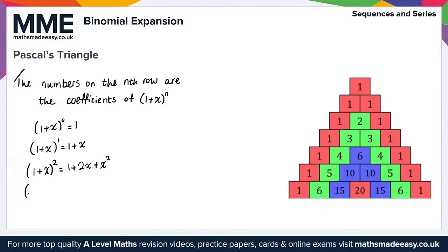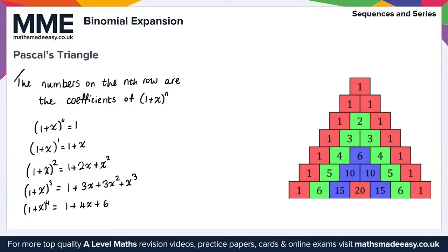This pattern keeps going. For example, (1+x) all cubed equals 1 plus 3x plus 3x squared plus x cubed. And if we do (1+x) to the 4, that equals 1 plus 4x plus 6x squared plus 4x cubed plus x to the 4. That carries on and so on, and that gives us everything we need for Pascal's triangle.